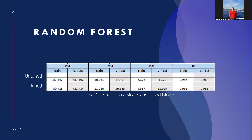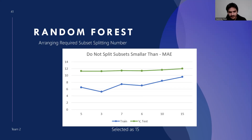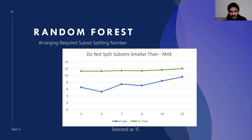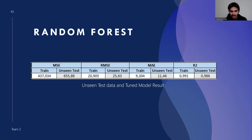Professor: There is a typo in your heading — 'do not split subsets smaller.' Student: I'm sorry for that, we will correct it in the final report. On this table, you can see the untuned and tuned model results together. We think we have a more generalized model after tuning. The tuned model results with unseen test data show a small difference between test and training results, and the model looks good in terms of mean absolute error.